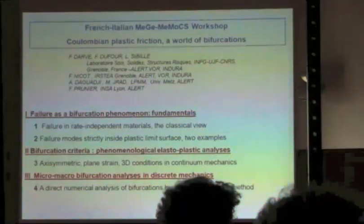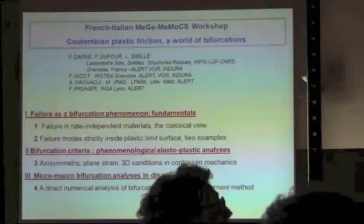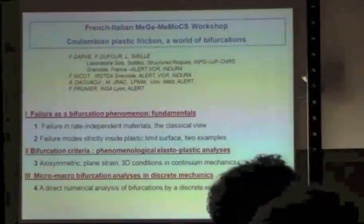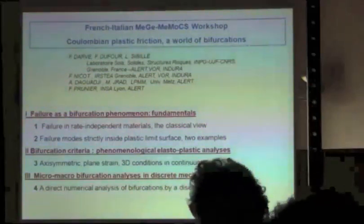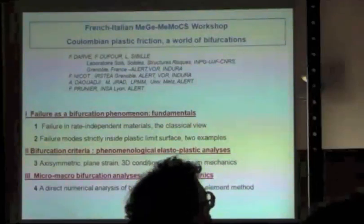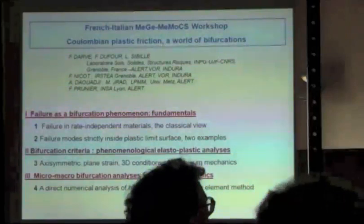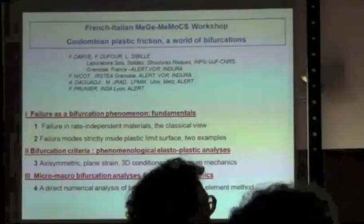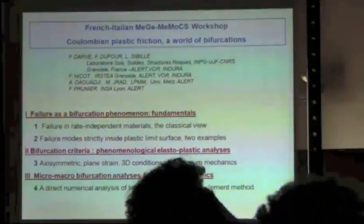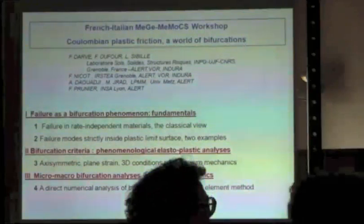The important point is that Coulomb friction leads to a non-associated behavior. This is a very important question, and this non-associativeness of Coulomb friction is evident immediately just with a box on a table. With a box on a table, you have just the normal stress and the tangential stress.